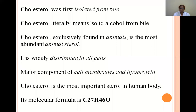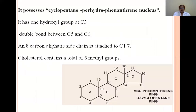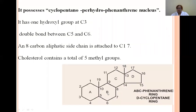The formula of cholesterol is C27, H46, and O. Cholesterol possesses a cyclopentanoperhydrophenanthrene nucleus. This nucleus consists of rings A, B, C, and D — where A, B, C are the phenanthrene rings and D is the cyclopentane ring. The phenanthrene ring is attached with the cyclopentane ring, hence it is known as the cyclopentanoperhydrophenanthrene nucleus.